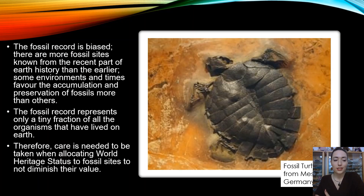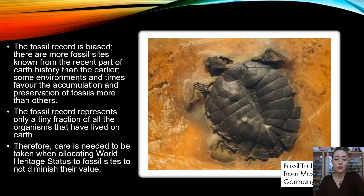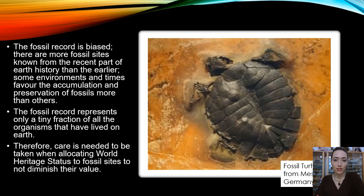The fossil record is biased, so we're never going to get a perfect picture of all time periods. This is down to the fossilization process itself — there are perfect conditions for fossils to form and there are wrong conditions, so there are going to be favored time periods. The fossil record represents only a tiny fraction of all organisms that have lived on earth. We also need to take care in allocating World Heritage status so we don't diminish their value — not every fossil site will get that status, because we'd dilute the value of the exceptional ones. This image on the right is a fossilized turtle from the Messel Pit World Heritage Site in Germany.